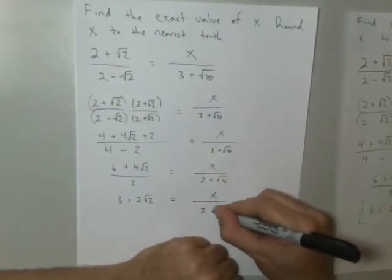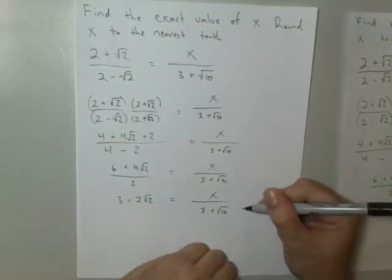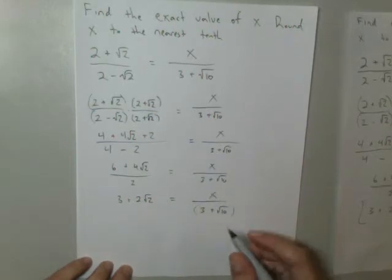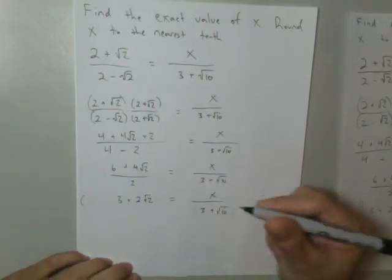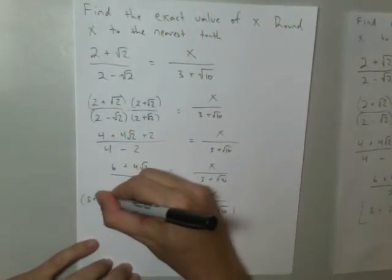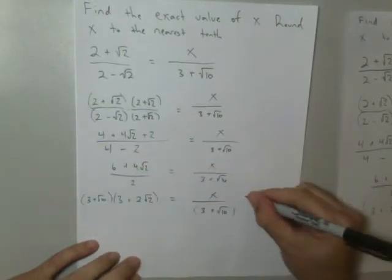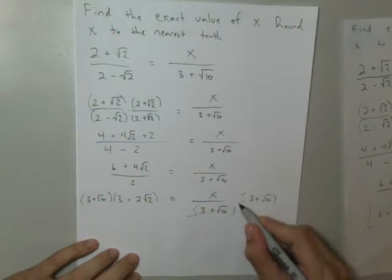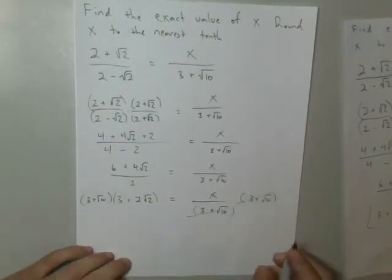x over 3 plus the square root of 10. Now I'm going to go ahead and multiply both sides by this denominator. So you know what? I'll show that here. 3 plus the square root of 10. 3 plus the square root of 10. So they'll cancel here. Now I'm going to go ahead. Now I have x on the right, which is nice.